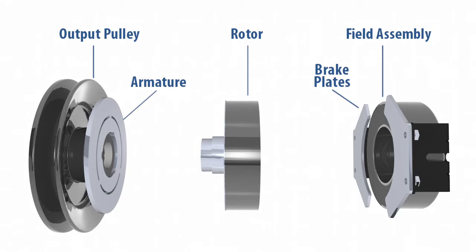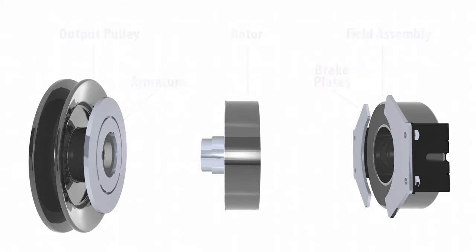The key components to the clutch are output pulley, armature, rotor, brake plates and the field assembly.